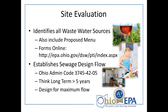The site evaluation, in addition to the soil evaluation, tells Ohio EPA and your health department what the expected wastewater characteristics going to the system will be — both in terms of flow and strength. You want to identify all wastewater sources, including the extent of kitchen facilities, food preparation plans, seating both inside and outside, and the proposed menu. Forms for the site evaluation are found at the website listed on the slide.